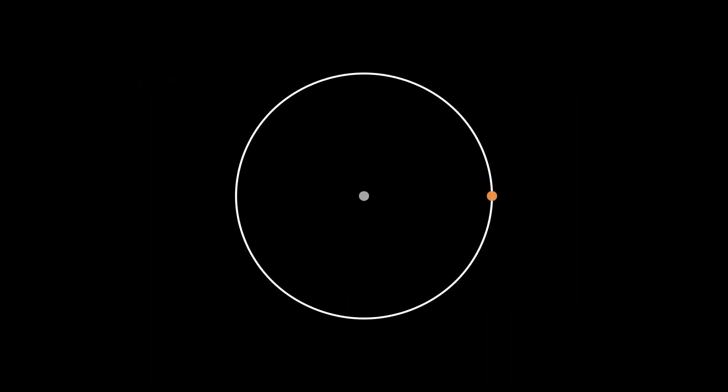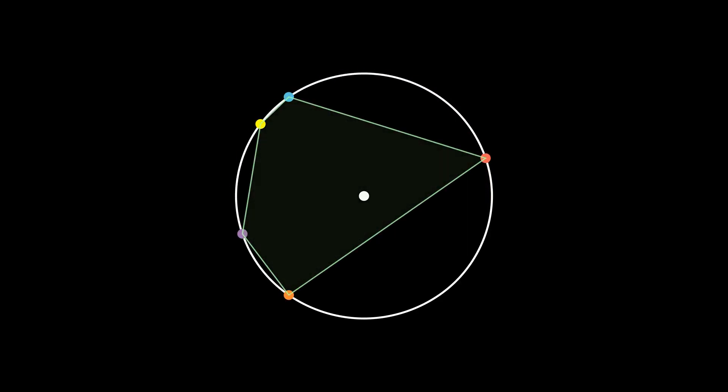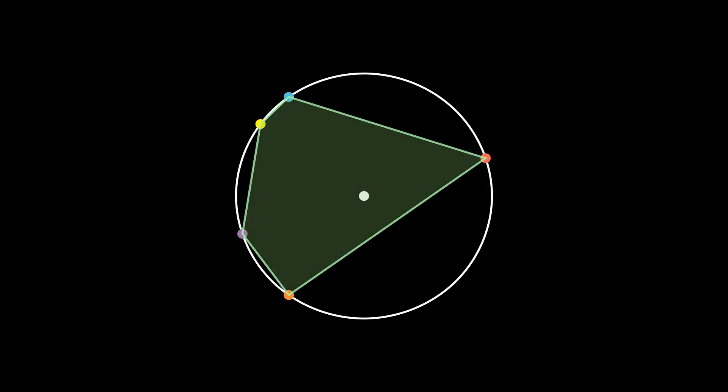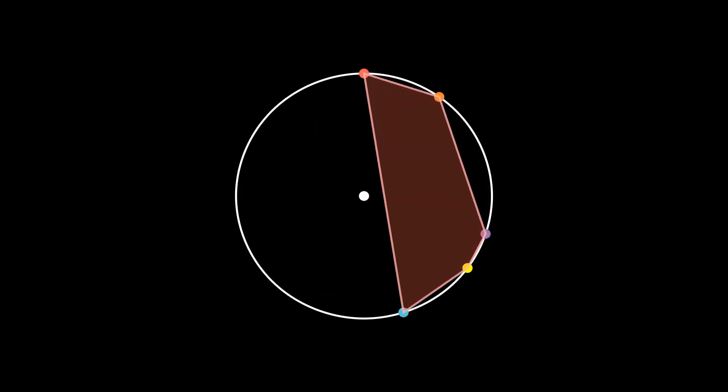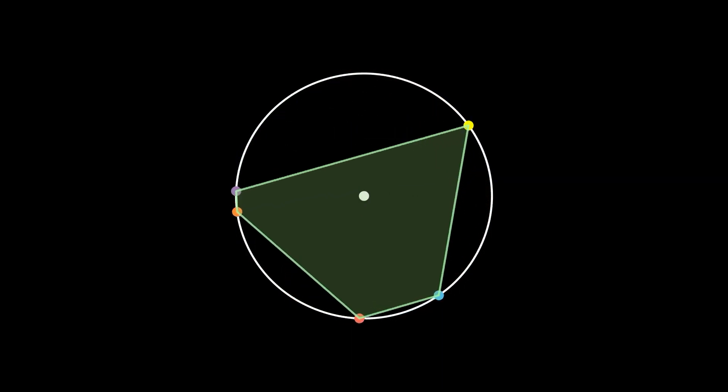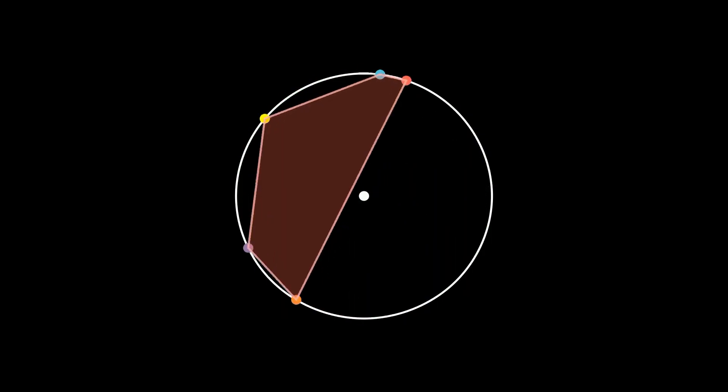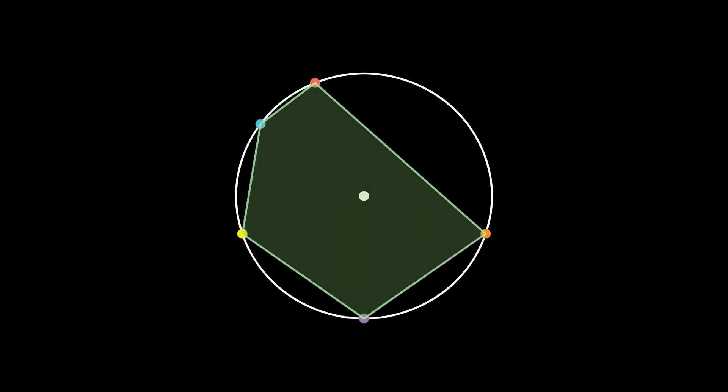Pick k random points on a circle, what is the chance for the circle's center to be inside their convex hull? You already know the answer for k equal to 3, and you know it should be an increasing function. Try to find out what it is.